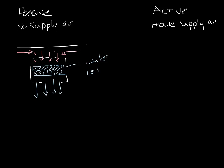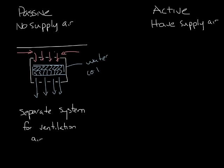As I said, there's no supply air on a passive chilled beam, so you have to have a separate system providing ventilation air to meet your ASHRAE 62.1 requirements. Passive chilled beams are not as common as active chilled beams in the U.S., so let's move on to active chilled beams.